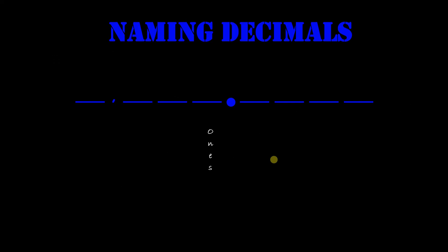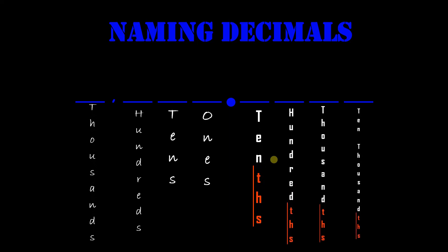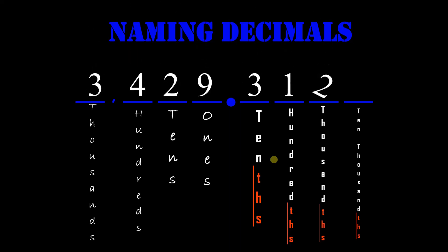Punta muna tayo dito sa naming ng decimal. Review lang uli natin sa past video. Yung una rito, yung 3 ay 1000, 400, 2 is 10, and 9 is 1. Ngayon, dito naman sa 3.125 — ito yung tinatawag na decimal. Binabasa natin yung decimal na yun: 'and 3 tenths, 1 hundredths, 2 thousandths, and 5 ten-thousandths.'